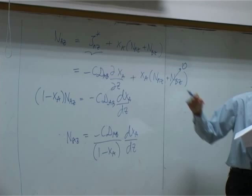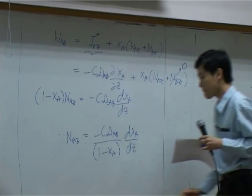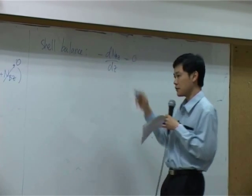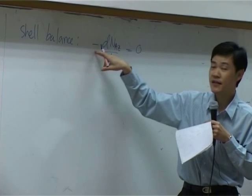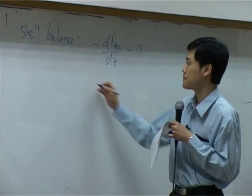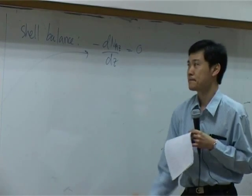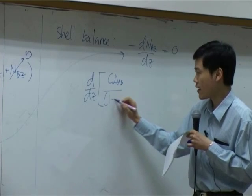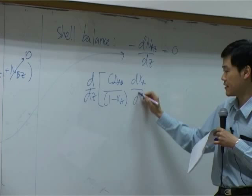From this, I can take it and replace it into shell balance. So from shell balance, you have minus dNaz by dz equal to 0. So I intentionally keep this minus sign, simply because this minus sign and that minus sign will cancel out eventually. So bring that here, you get d by dz of c dAb, 1 minus xA, dxA by dz equal to 0.